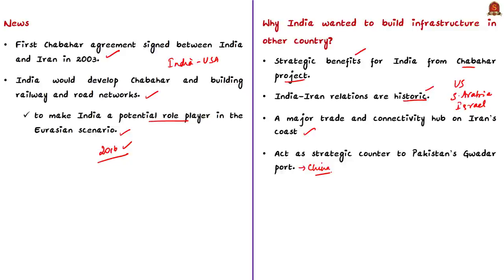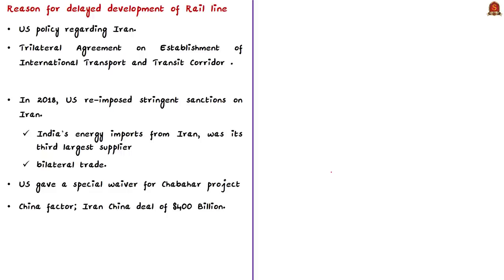In the last five years, the Chabahar port development moved forward but the railway link has not progressed much. The reason for the delayed railway development was US policy over Iran. The US placed heavy sanctions on Iran until the signing of the Joint Comprehensive Plan of Action (JCPOA). Only after sanctions were removed did India sign an agreement with Iran and Afghanistan in 2016, which includes a trilateral agreement on the establishment of an international transport and transit corridor between Afghanistan, Iran, and India.